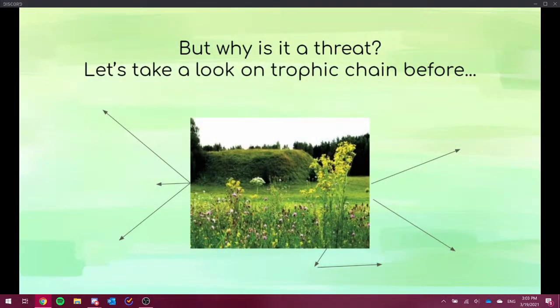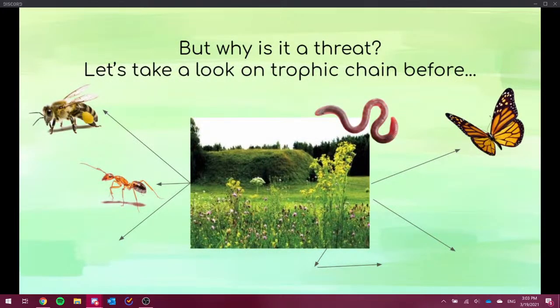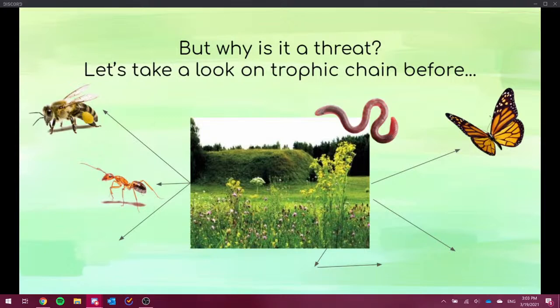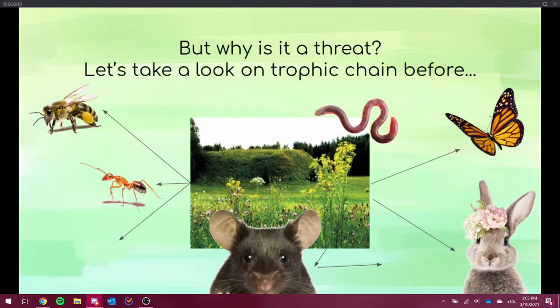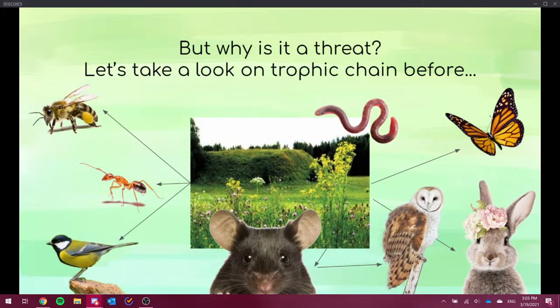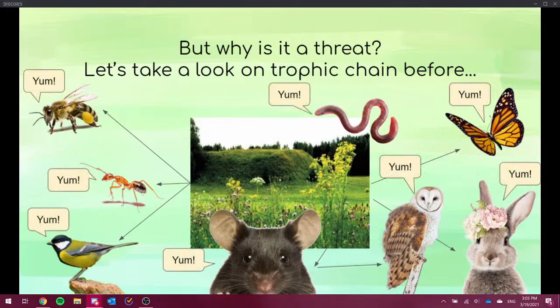So why is it a threat? Let's take a look on the trophic chain. So this is some hypothetical situation when we have ecosystem. The producers are plants on the meadow. We have some invertebrates, which are usually the base of the ecosystem. And then we have some mammals and birds, the owl is as a secondary consumer. So we can see that they all are enjoying themselves. They all think that the food sources are yummy and they like it there.